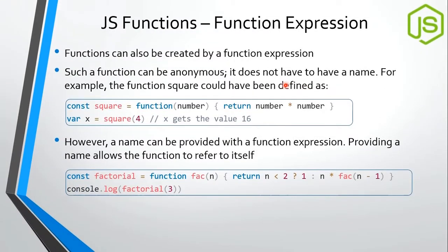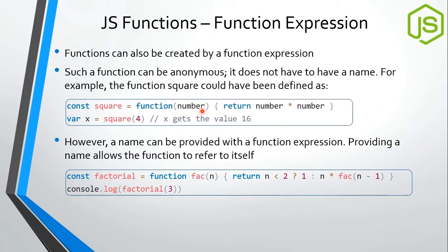We can also create a function using a function expression. With function expressions, the function is anonymous and the reference is stored in a variable — typically a const, so the developer cannot overwrite it. The function is declared without a name and we call it using the variable name, like squares. Parameters are received just as in regular functions.